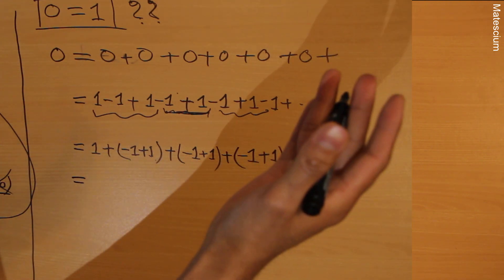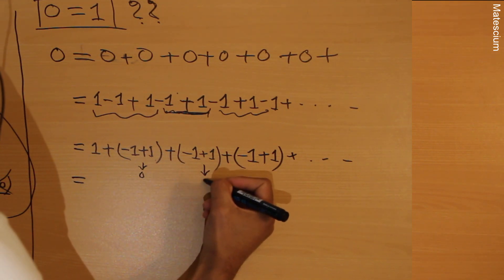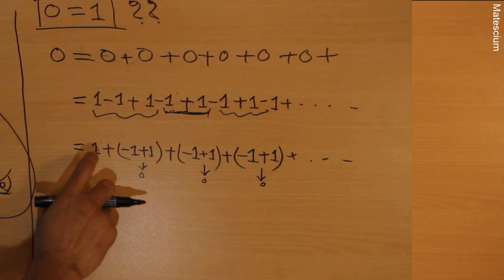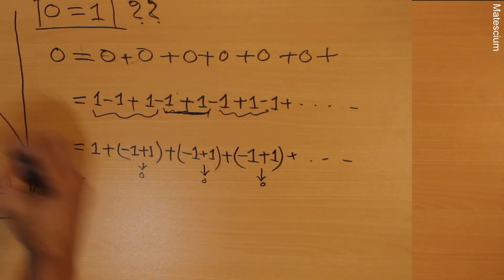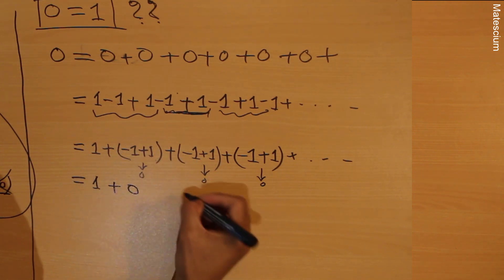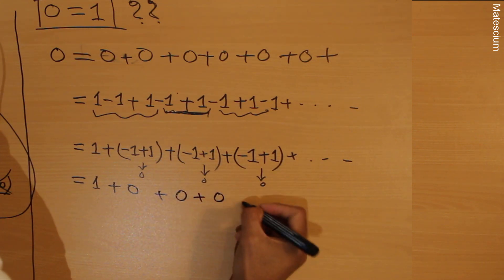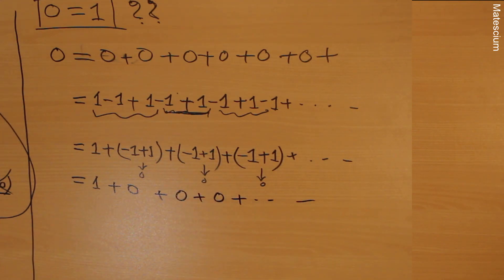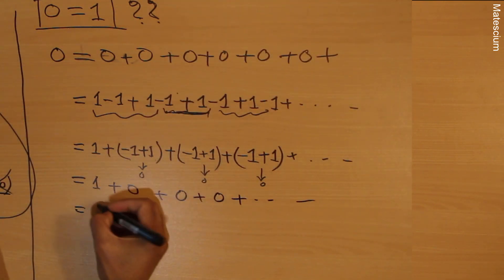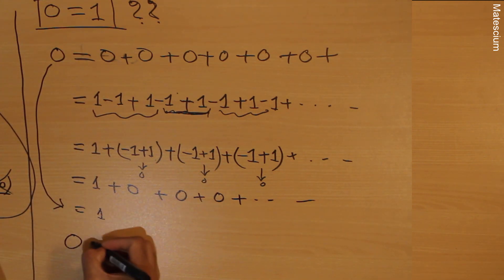Interestingly, look at what we have: minus one plus one equals zero, this is zero, this is zero — everything I write will be zero, except this leading one. So I can write one plus zero plus zero plus zero, and so on, which equals one. That means, from the beginning, zero equals one.